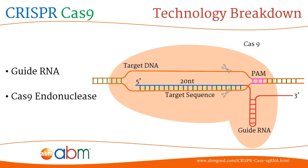Once the complex is localized to the target DNA, Cas9 cuts the desired region with extreme accuracy, resulting in a double strand break.